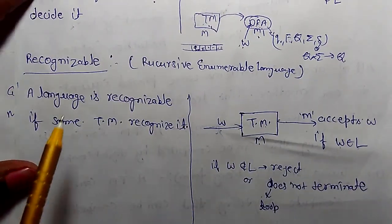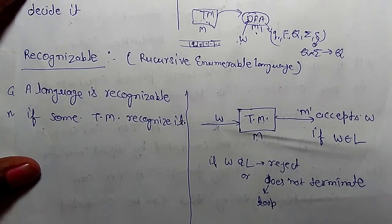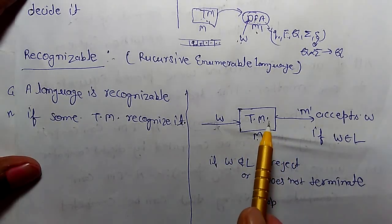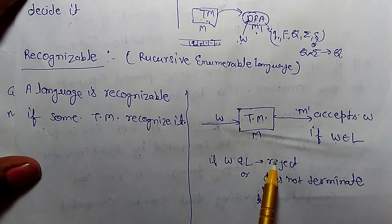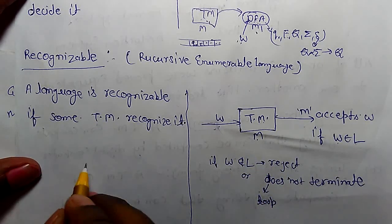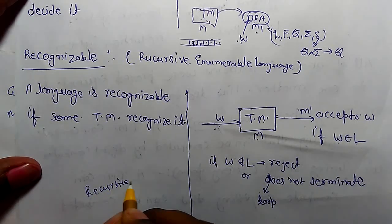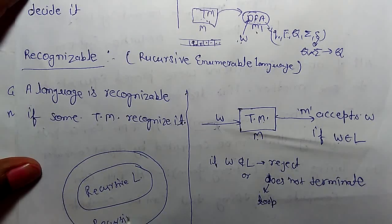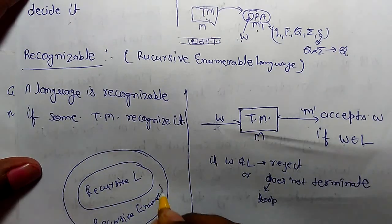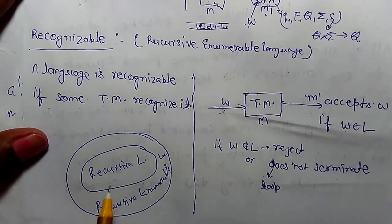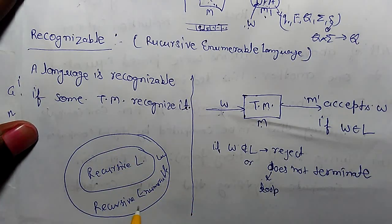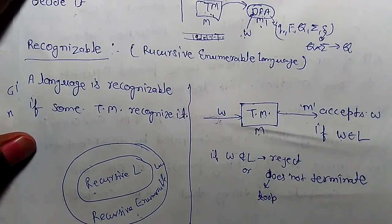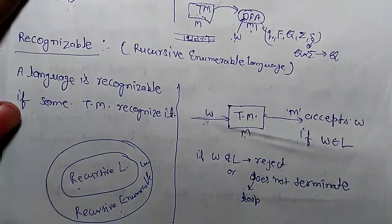A language is recognizable if some Turing machine recognizes it — meaning if w belongs to the language it accepts, otherwise it may go into an infinite loop. Regarding the relationship: if a language is recursive, then it is also a recursive enumerable language. But if a language is recursive enumerable, we cannot say it is recursive or that it is not recursive. This concludes the definitions of recursive language and recursive enumerable language.